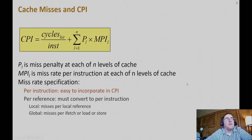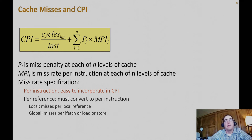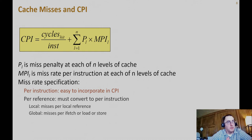This looks very similar to AMAT. With multiple levels of cache, the miss penalty becomes a summation of the products of miss penalty and miss rate for each level, since each level has its own miss rates and typically exponentially increasing miss penalties as you go farther down the hierarchy. If miss rate is given as misses per instruction, it's straightforward to plug in. If given as memory access references, you need to know the instruction mix: loads per program, stores per program, misses per load, misses per store.